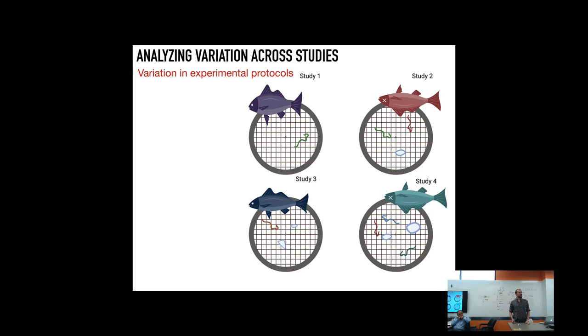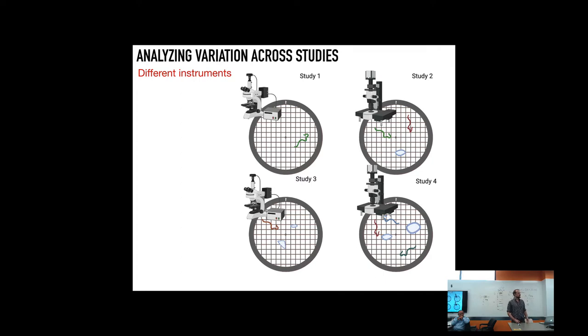Alternatively, we can have an analysis based on variation in experimental protocols. Some studies might have been done on living fish that were caught swimming in the ocean, and others on fish found on the beach, where you have potential selection bias. You might detect that if you compare effect sizes across studies based on how they were done.